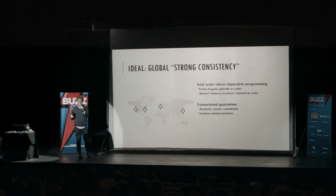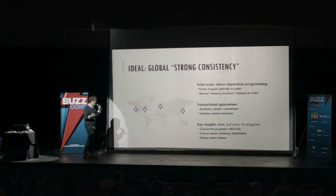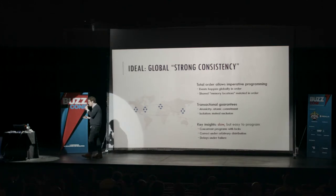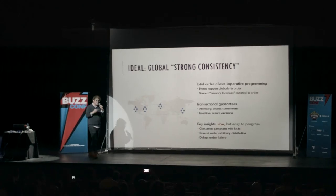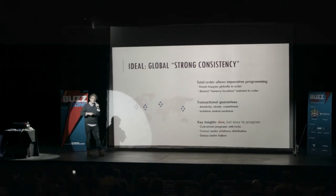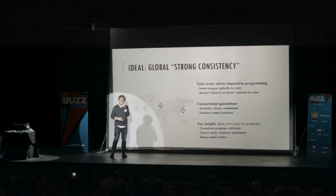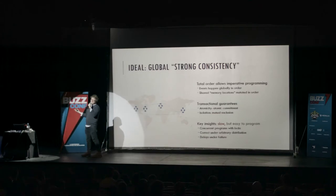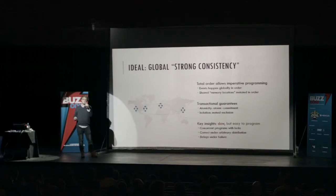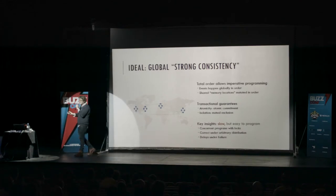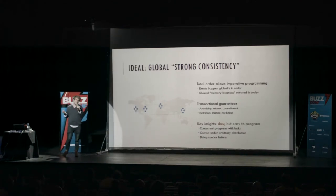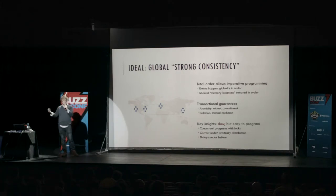This makes programming at geoscale very easy. Obviously this is slow — if I have to wait for communication with data centers all over the world, I'll be waiting a while because the speed of light isn't changing. But it's easy to program: we can take a program running on one machine with multiple threads using locks, deploy it georeplicated using serializable and atomic transactions, and everything works fine. The problem is, if something goes down due to a network partition or failure, the whole system will sacrifice liveness to preserve safety.